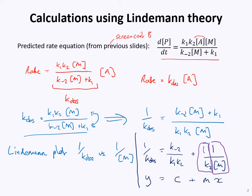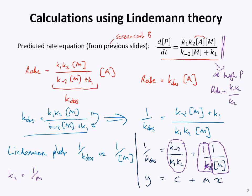To be clear, the gradient of the Lindemann plot is k₋₂/k₂, giving us k₂ from the gradient. The intercept is 1 over the limiting rate constant at high pressure — k_infinity. At high pressure, the rate equation tends to: rate equals (k₁k₂/k₋₂) times [A], because the [M] terms cancel. So k_infinity equals k₁k₂/k₋₂, and the intercept of the Lindemann plot gives us 1/k_infinity.